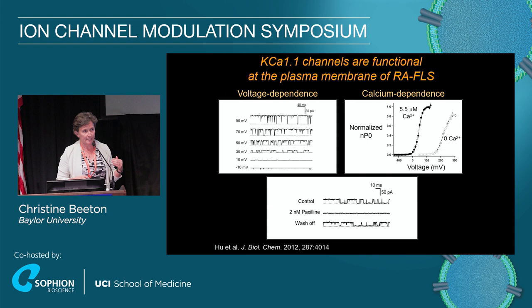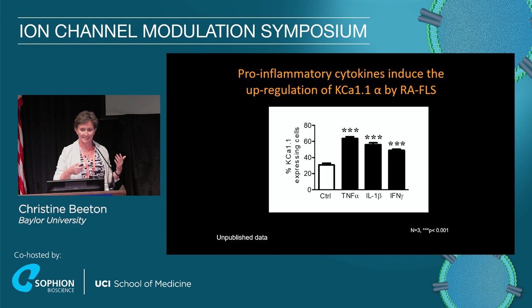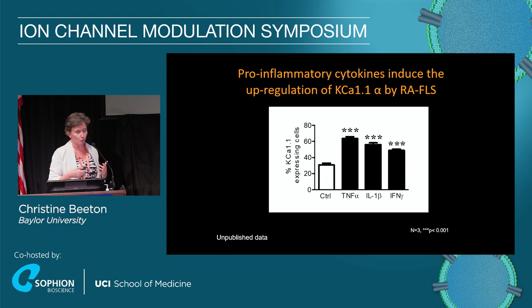In patients with active disease, they have a very pro-inflammatory environment, which we don't recapitulate once we isolate the cells and put them in culture. So we pre-incubated the cells with pro-inflammatory cytokines that are elevated in patients with rheumatoid arthritis. What was interesting is all three cytokines we tested upregulate expression of this channel, which gave us a hint that the channel was important in the function of those cells during rheumatoid arthritis.